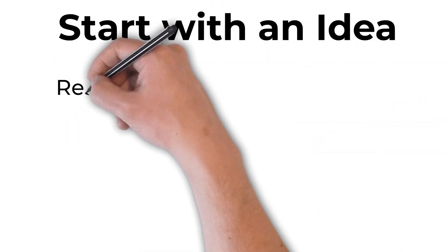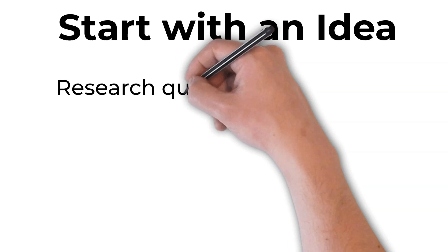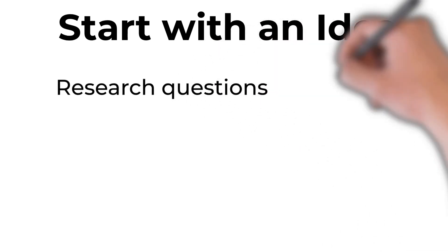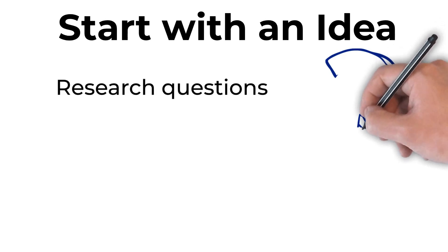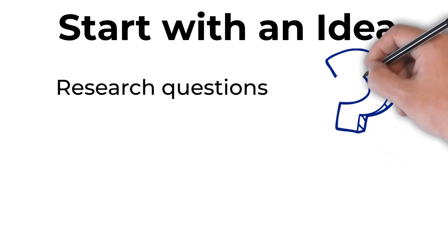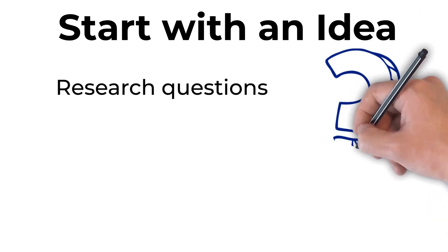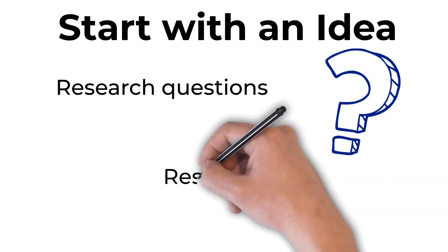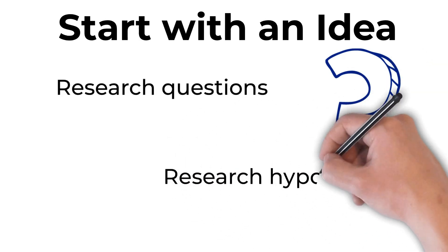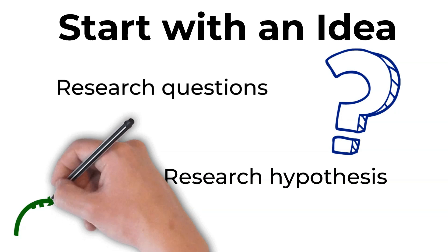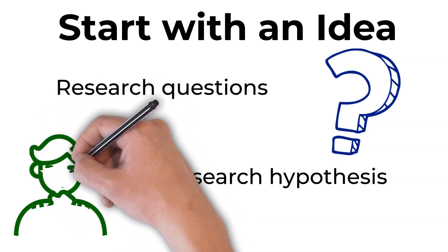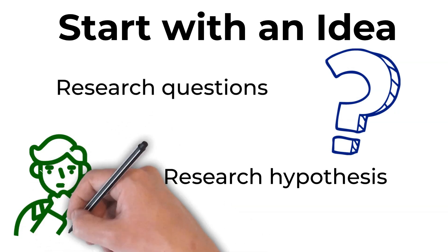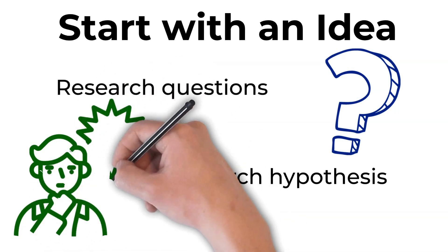Before you start writing your research proposal, you want to first start with what your idea is. There's two main ways to talk about your idea. The first is research questions - asking a specific question that you can then perform research on. The second is a research hypothesis, which is an educated guess of what your research is going to find, usually informed by recent literature.